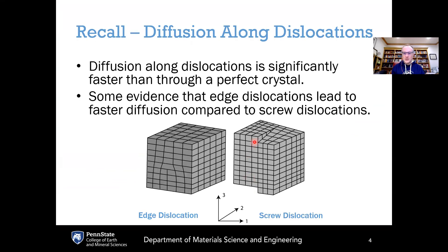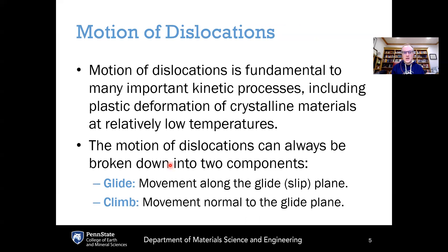Recall also that dislocations provided pathways for fast diffusion. Significantly faster diffusion occurs along this linear dislocation defect compared to diffusion within a single crystal. There is some evidence that edge dislocations lead to faster diffusion compared to screw dislocations, perhaps because they tend to open up a little bit more and have less resistance along that diffusion pathway.